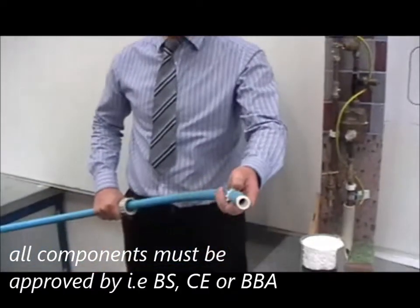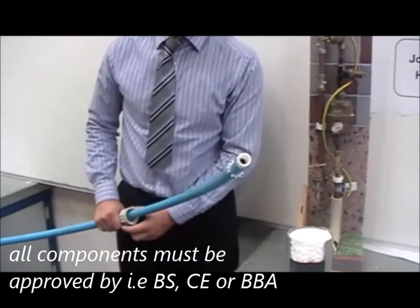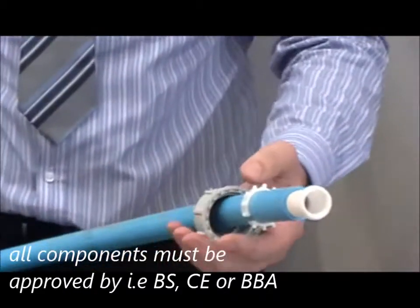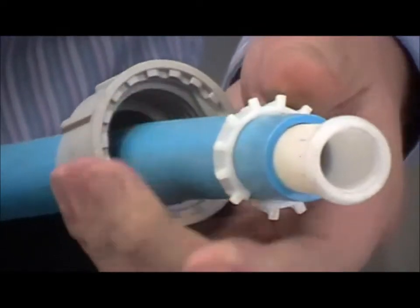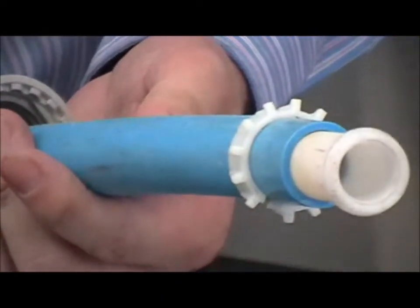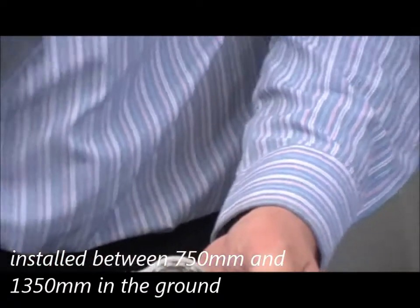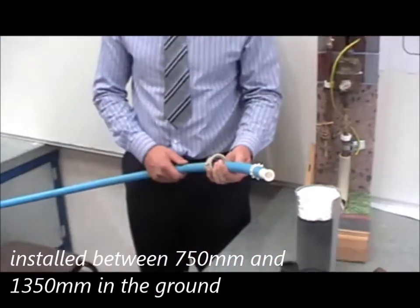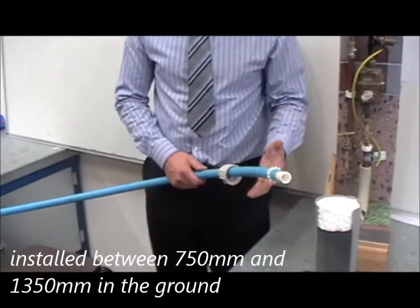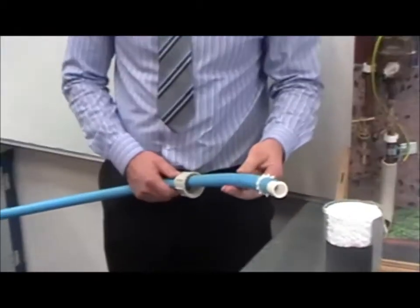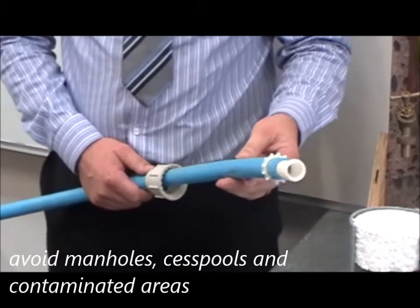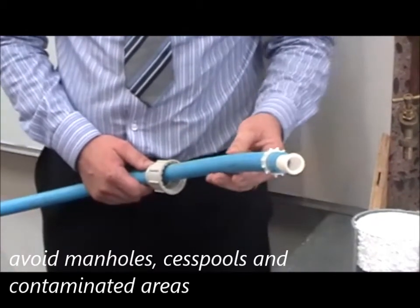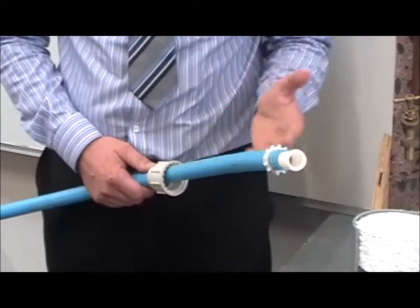First thing I'd like to talk about is the underground plywood MDPE, medium density pipe. It's 25mm. It should be bedded below 750mm, no higher than 1350mm. If you can't get it below 750mm, you have to inform the water board and insulate it as well. You can't install any form of underground water services near cesspools or contaminated areas such as petrol. You have to avoid manhole covers, go around them, not under them, not through them.